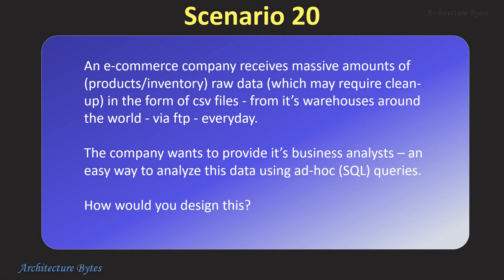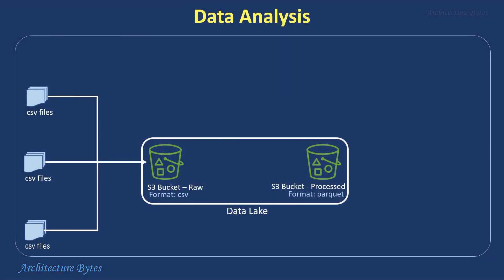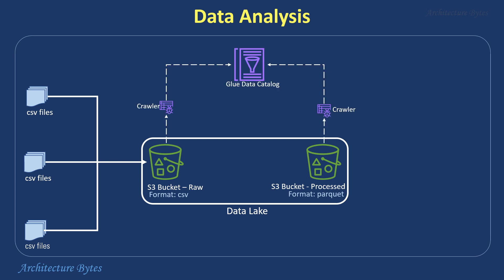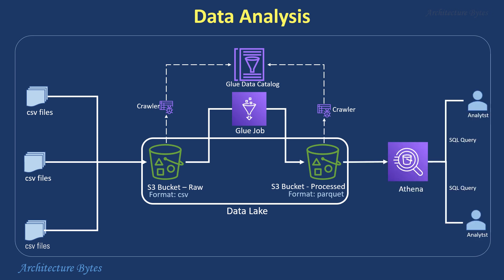An e-commerce company receives massive amounts of raw data as CSV files from its warehouses around the world via FTP every day, and wants to provide business analysts an easy way to analyze this data using ad-hoc SQL queries. The architecture uses a data lake with two S3 buckets — raw and processed. Incoming raw CSV files are saved in the raw bucket while cleaned files are stored in the processed bucket. A Glue crawler crawls both buckets to create metadata tables in the Glue Data Catalog. A Glue job cleans and transforms the raw data into a storage and query-efficient format like Parquet and saves it in the processed bucket. Analysts can then run ad-hoc queries using Athena against the data in the processed bucket.